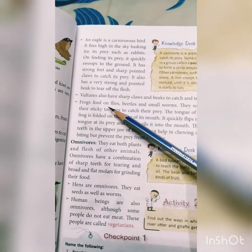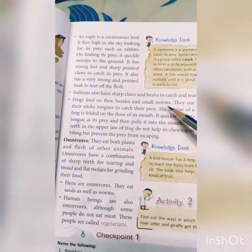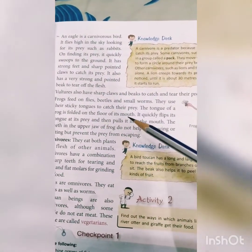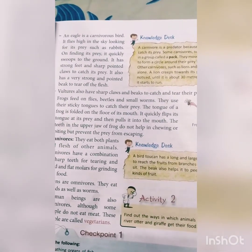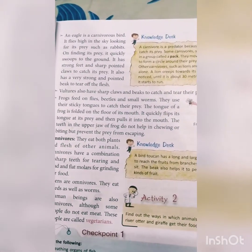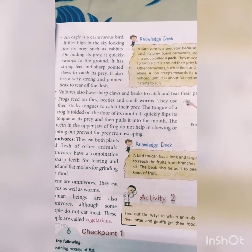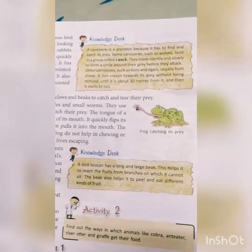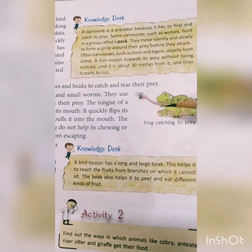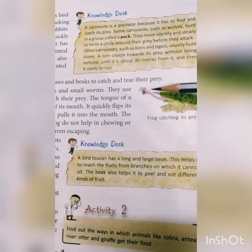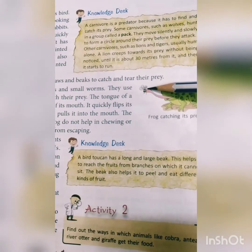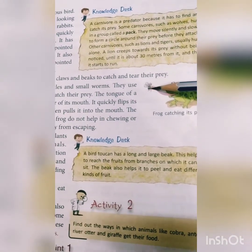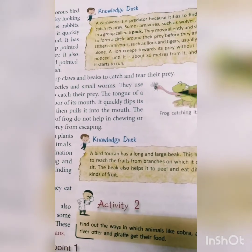Frogs feed on flies, beetles, and small worms. They use their sticky tongue to catch prey. The tongue of a frog is folded on the floor of its mouth. It quickly flaps its tongue at its prey and pulls it into the mouth. As seen in the picture, the frog has a long sticky tongue — when it sees prey nearby, it flaps its tongue and the insect gets attached and is rolled into the mouth.